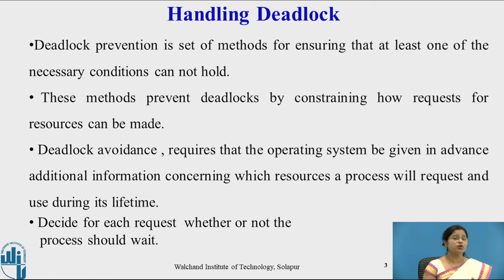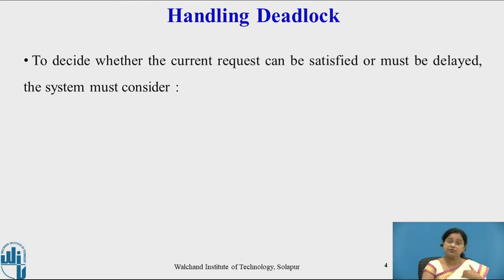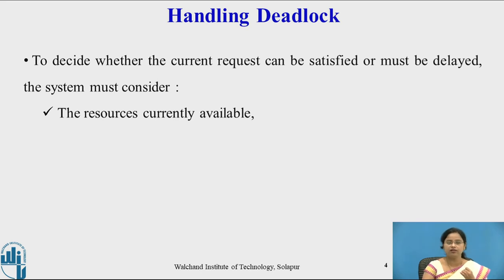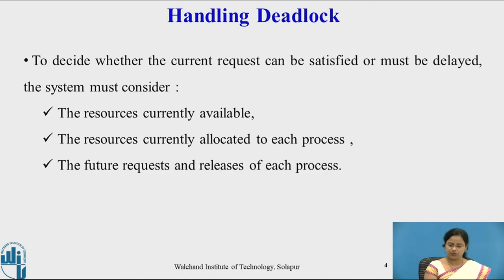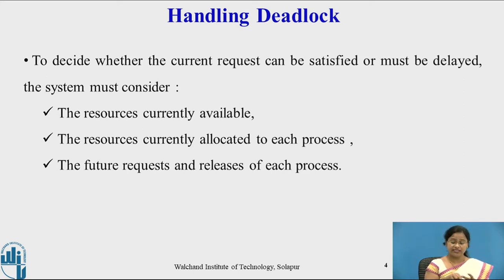In deadlock avoidance, the system must also decide for each request whether or not the process should wait. To decide whether the current request can be satisfied or must be delayed, the system must consider: the number of resources currently available, the number of resources currently allocated to each process, and the future requests and releases of each process. Whenever a process makes a request for a new resource, check whether those resources are currently available and what the future requests and releases of each process will be.